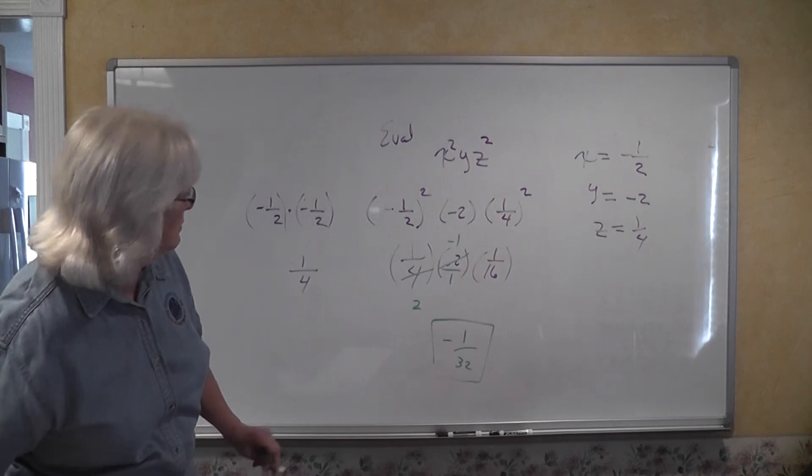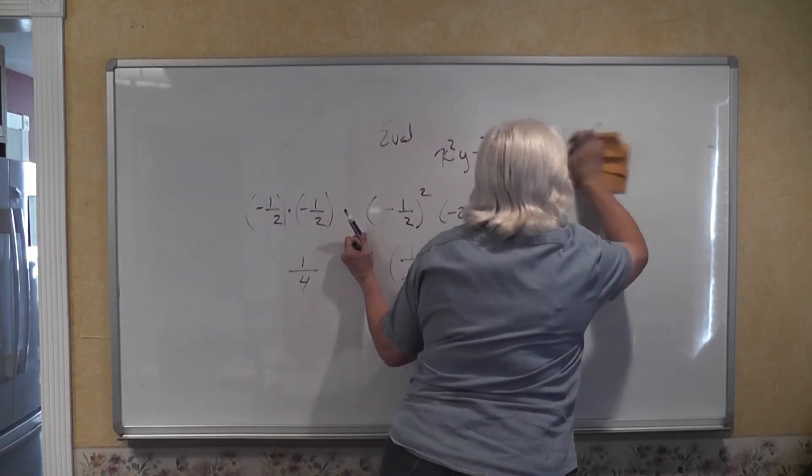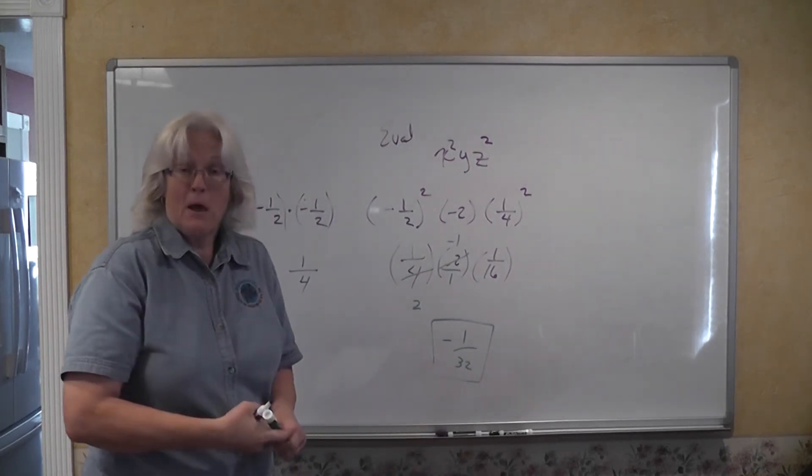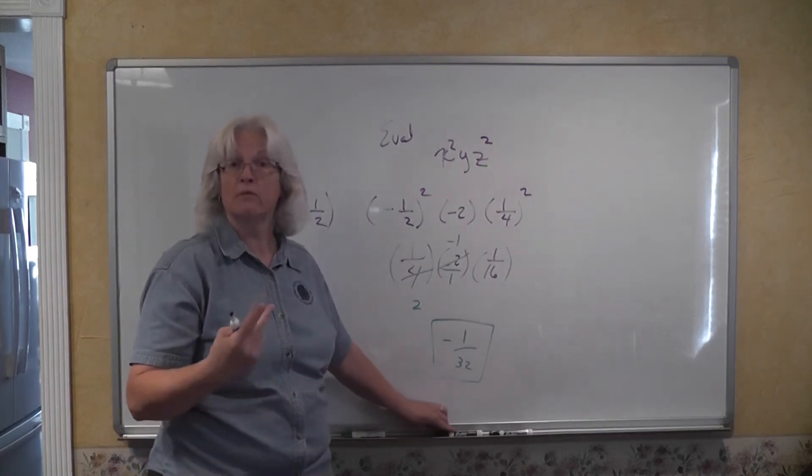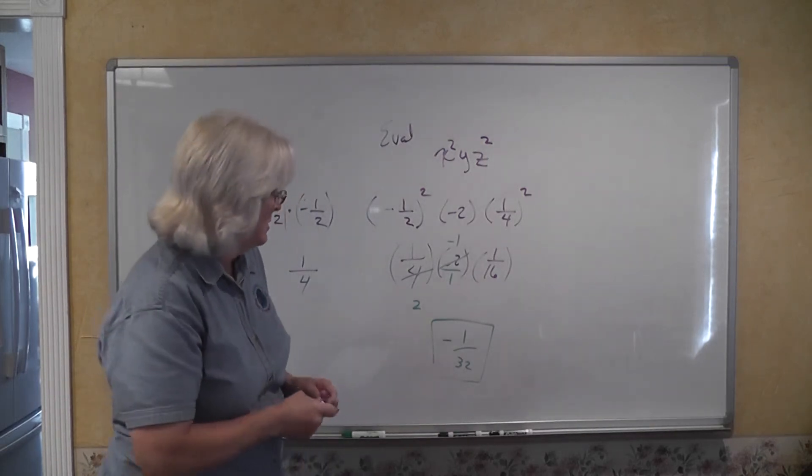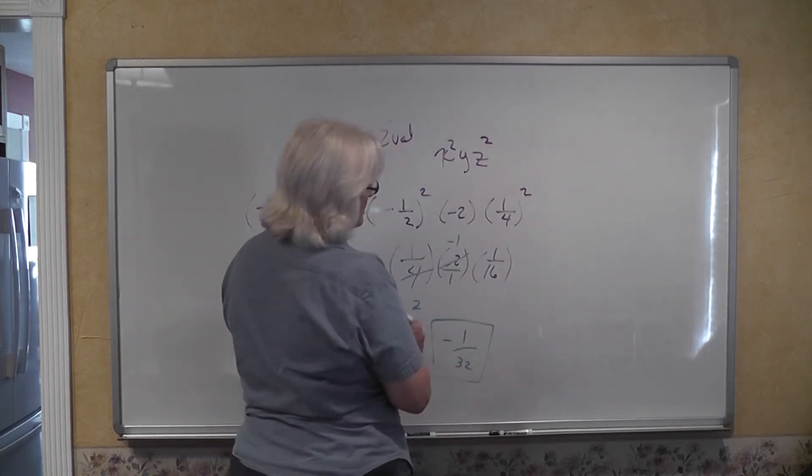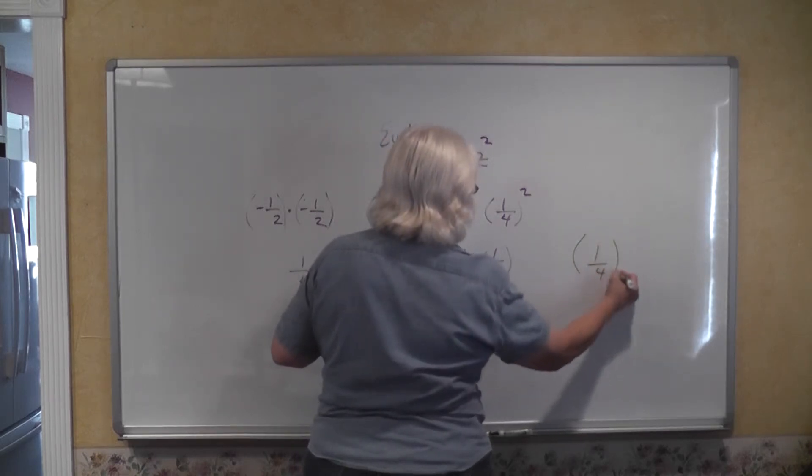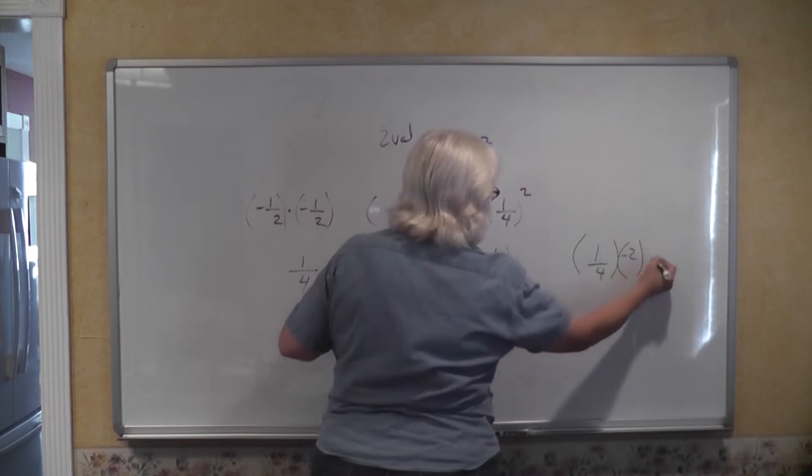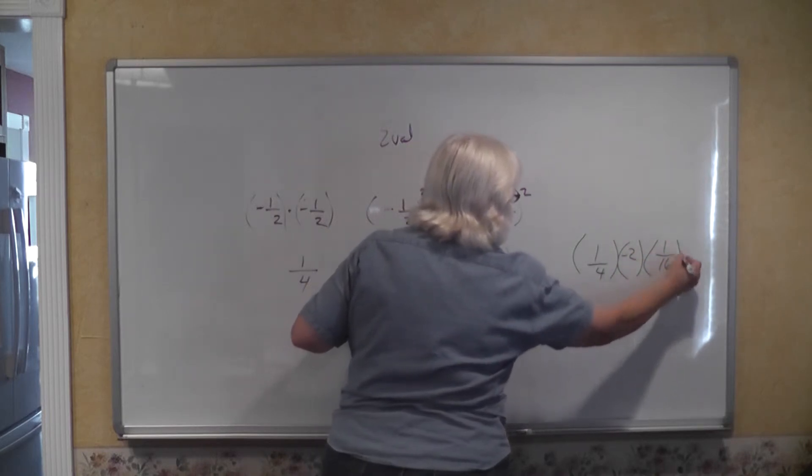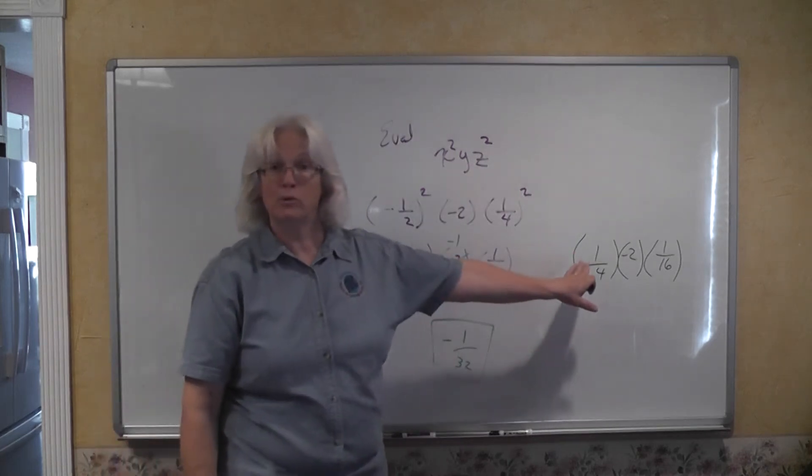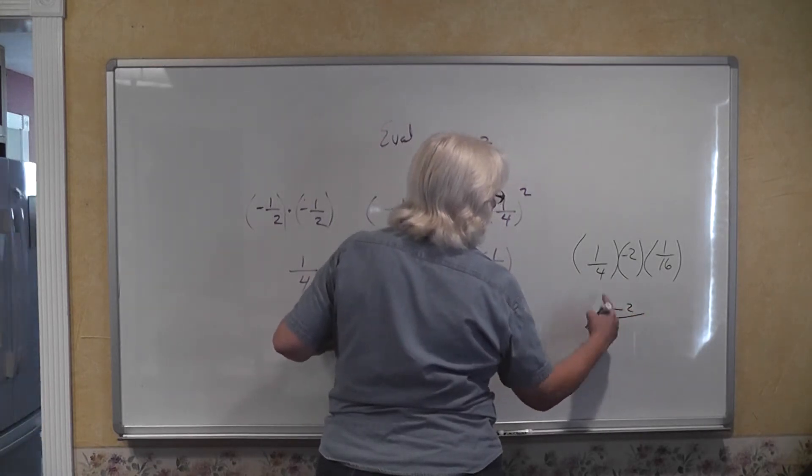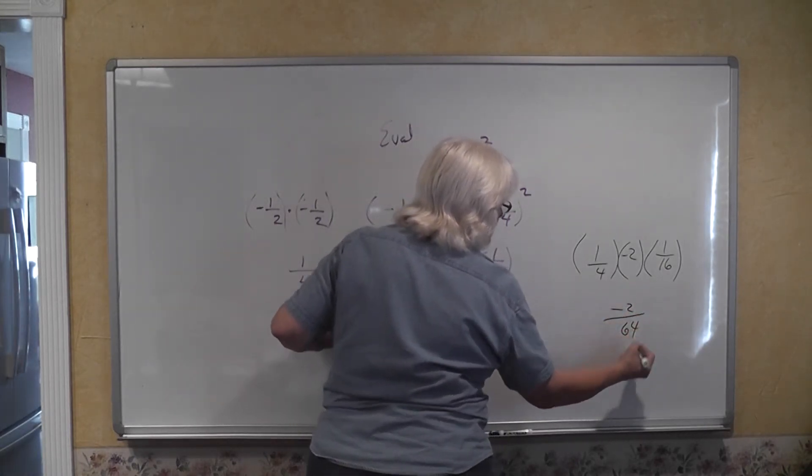Now let me write in black ink on the right how they chose not to cancel common factors first. Does it matter which way you go? Absolutely not. It's whichever makes the most sense to you. Both are equally legitimate methods. I'm going to pick up here at this step and I have 1 fourth times a negative 2 times 1 sixteenth.